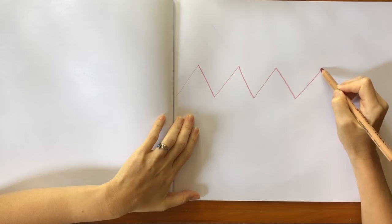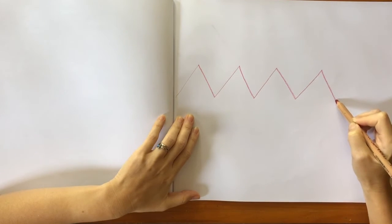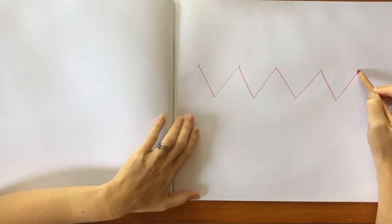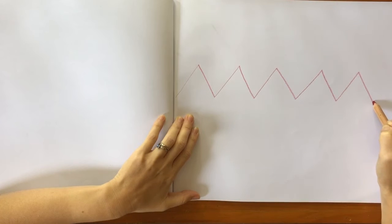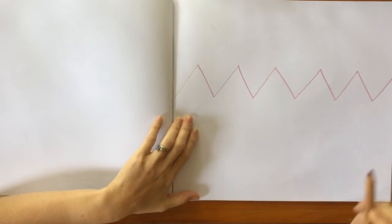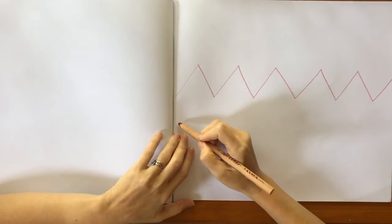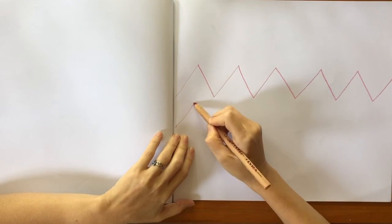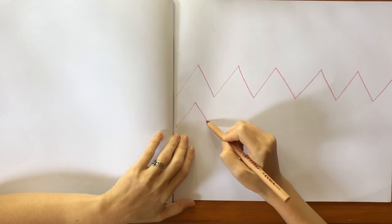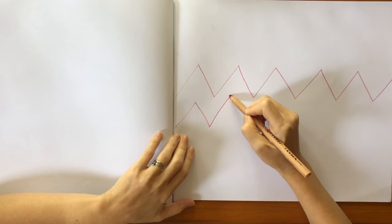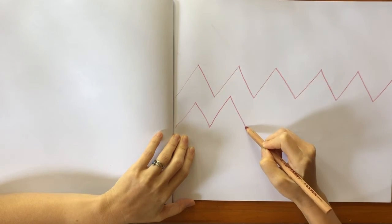So, we have diagonal lines, right? And then we could do another one. That's a little bit taller.